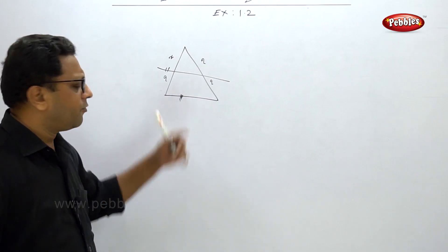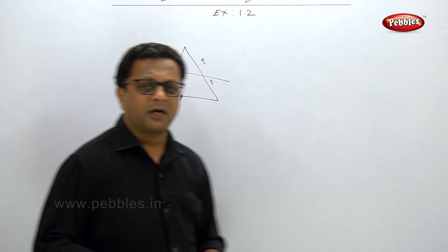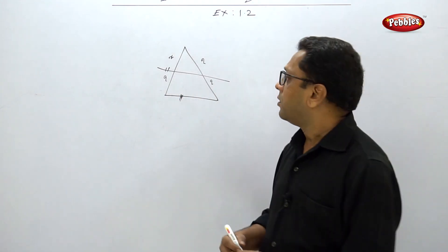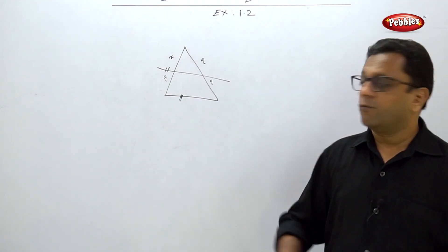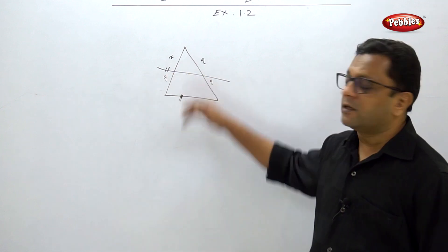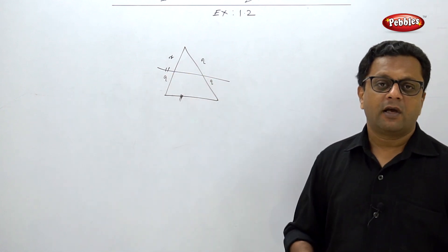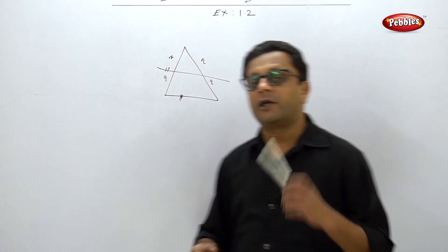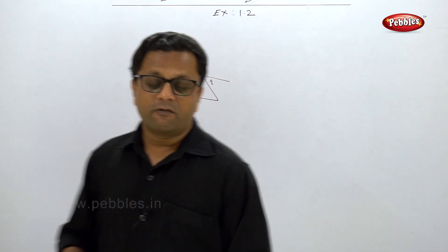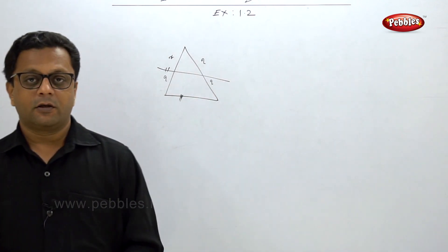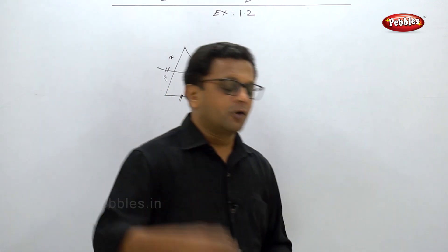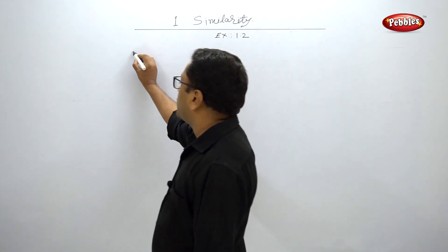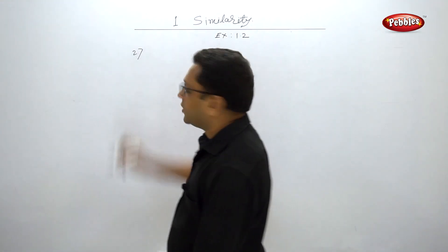All three figures show triangles of different shapes and rotations, with one line parallel to one side of the triangle. You have to use the Basic Proportionality Theorem to find the value of X. Please pause your video and solve this example now.